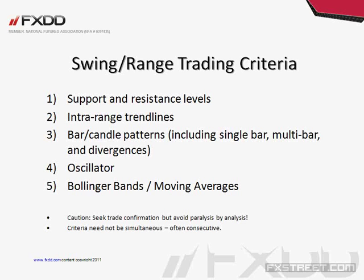I also look at price-oscillator divergences. When these factors come together I talk about 'confluence' — a coming together of different technical factors that give rationale to a trade. For example, if I see support and I'm looking for a turn, I want confirmation: that could be a hammer candlestick near support, a bullish divergence signal where price shows a lower low but the oscillator shows a higher low, or perhaps a 100- or 200-period simple moving average occurring right at that level.